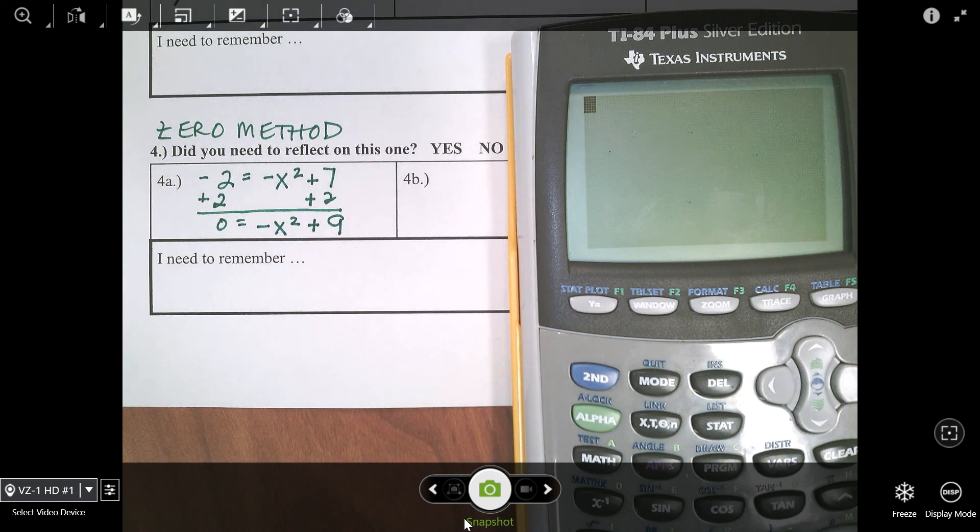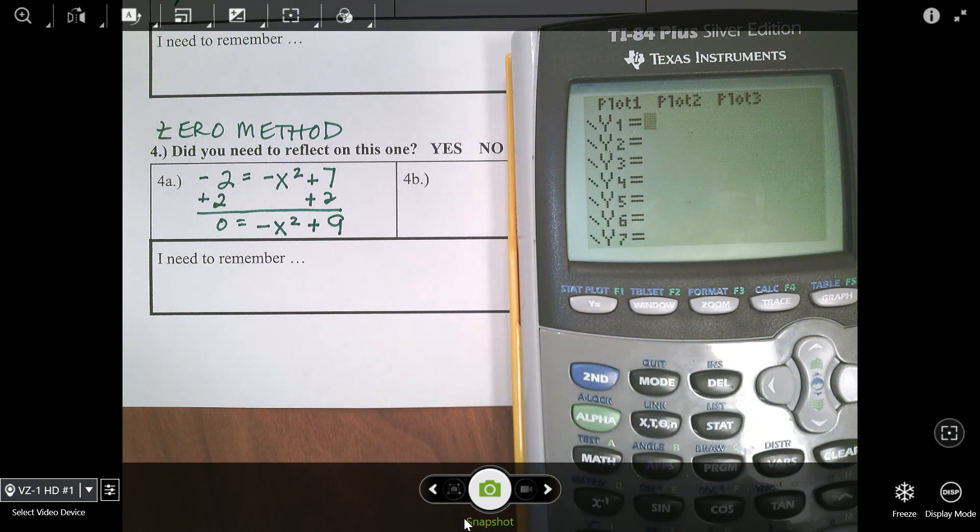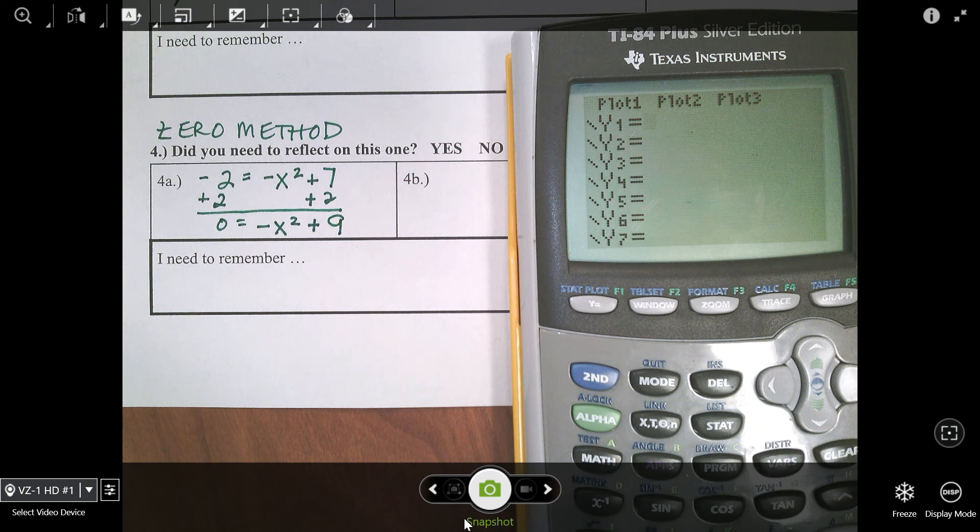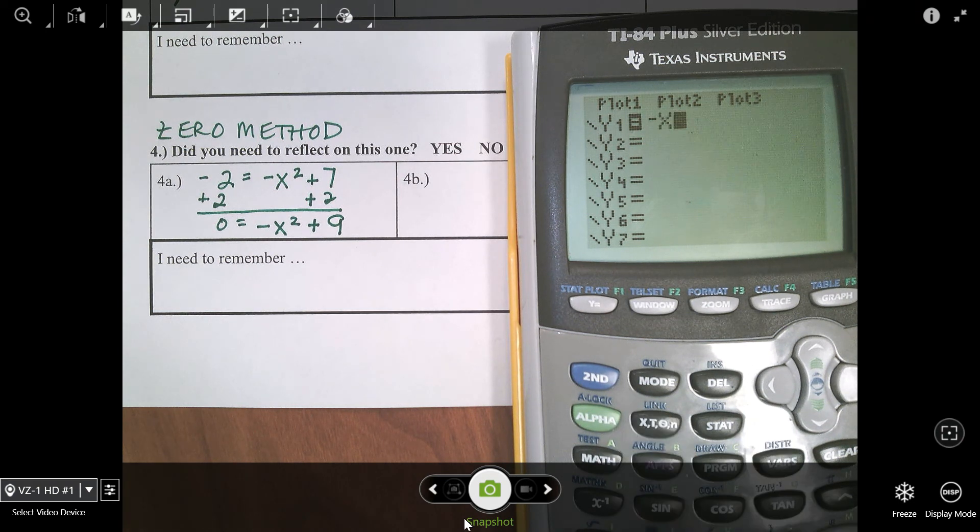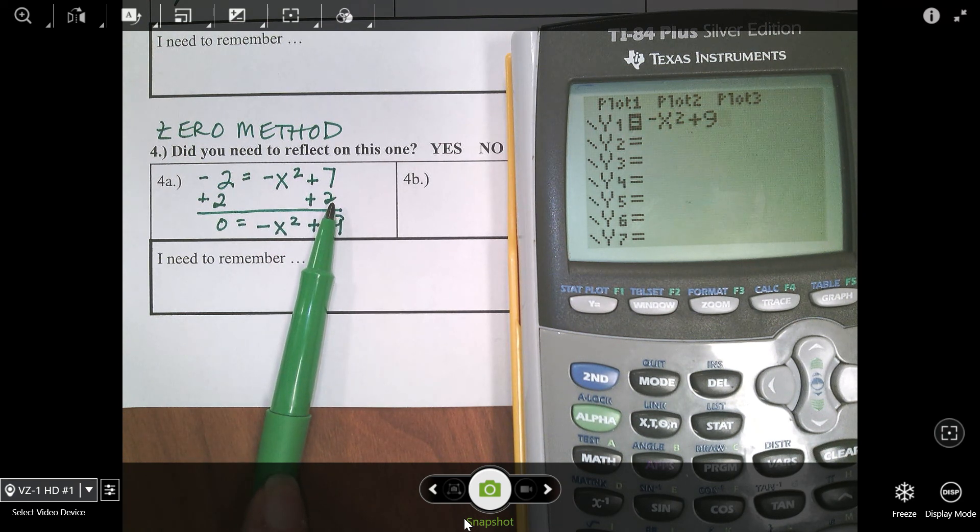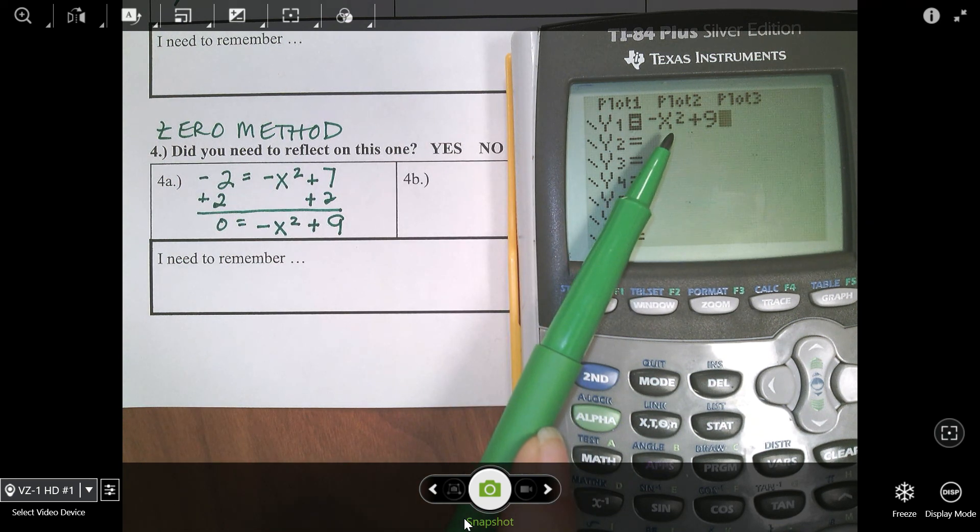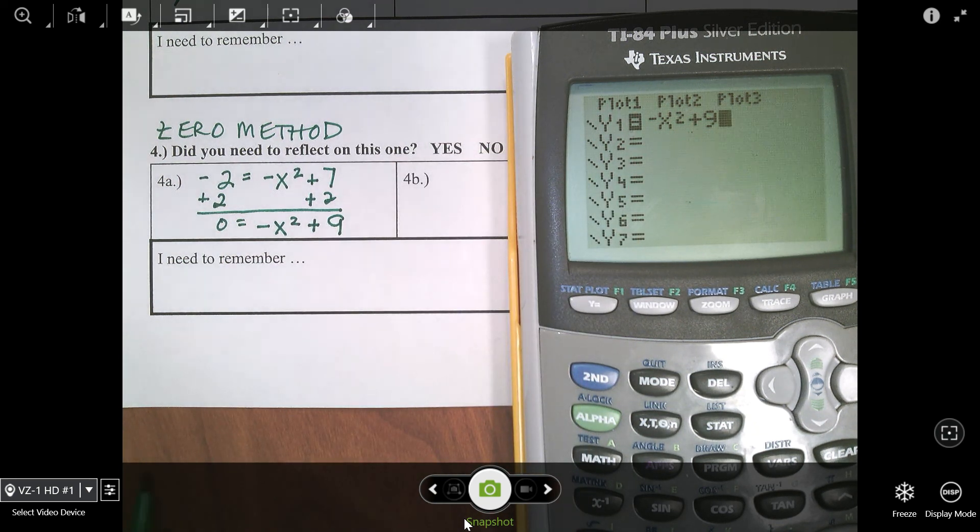Now I have it in standard form. I can go to my calculator, and in y equals, I'm going to enter -x² + 9. If you don't do that initial step, you don't get the correct answer. With this method, you have to have it in standard form first. All right, let's look at our graph.